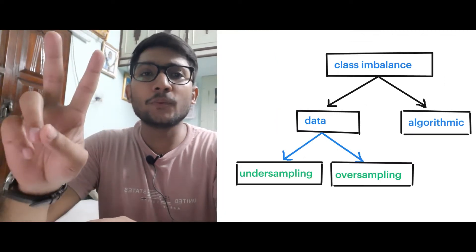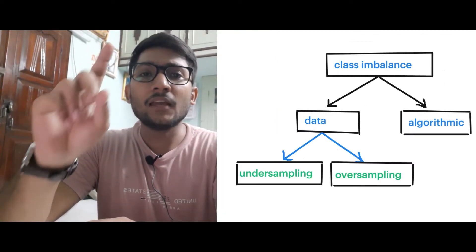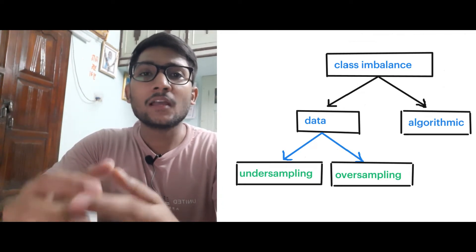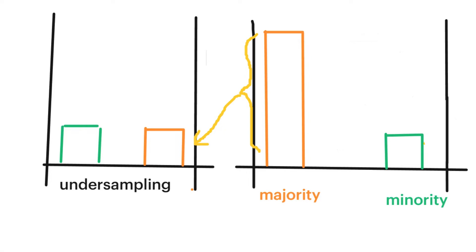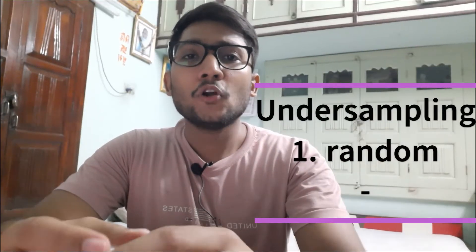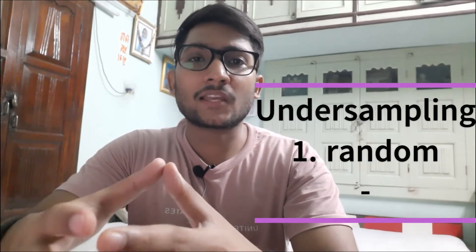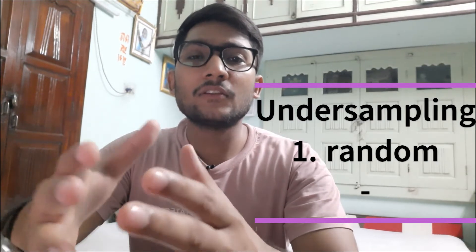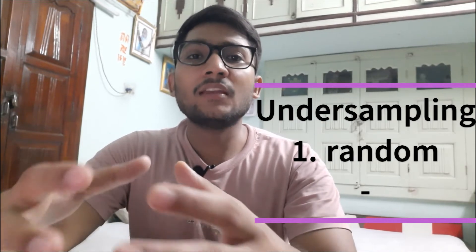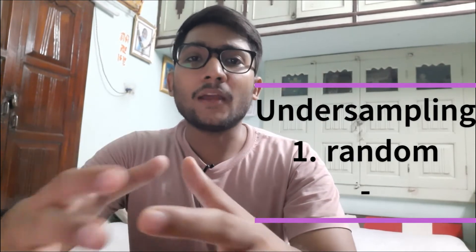Under the data approach, we have two primary techniques: undersampling and oversampling. Undersampling means reducing the majority class, whereas oversampling means adding more data points of the minority class. Under undersampling, we have two primary techniques. The first is to randomly remove or randomly choose data points from the majority class and make it comparable with our minority class.